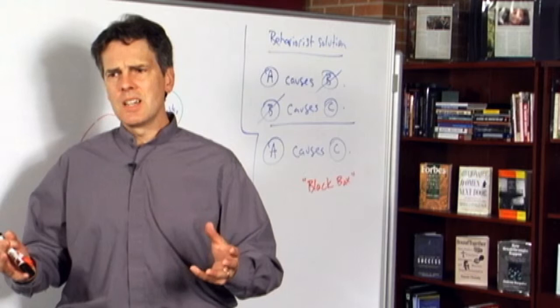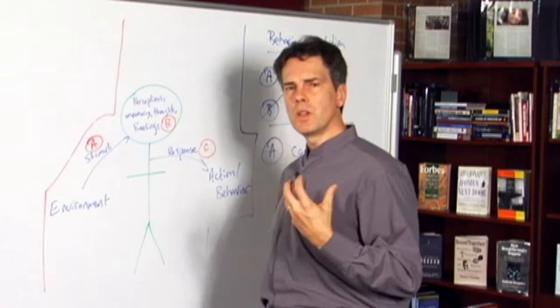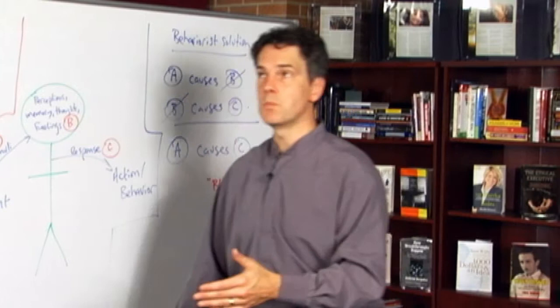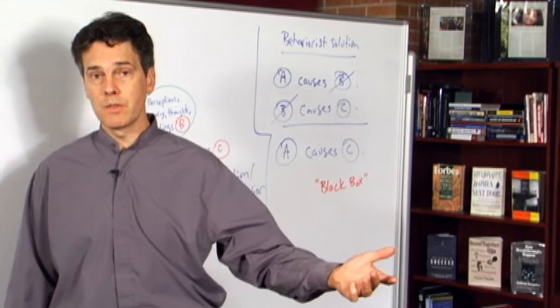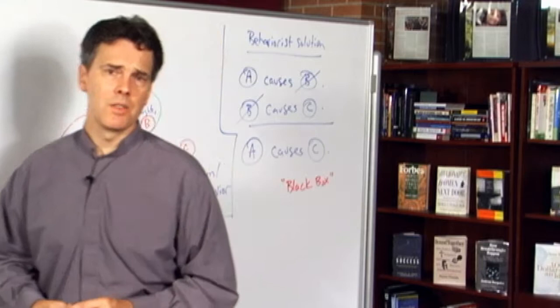So those are things that might seem like we have lots of choices about, but the environmental determinists will say that we don't really. Take things that maybe seem fairly biological, like just nutritional choices, putting food in the system. The behaviorists will point out that our food preferences are culturally conditioned. I eat certain kinds of foods because those are the kinds of foods my parents fed to me, and so I develop certain kinds of preferences, I develop certain kinds of aversions, and my preferences and aversions could have been entirely different if I had been raised in a different part of the world or at a different time.